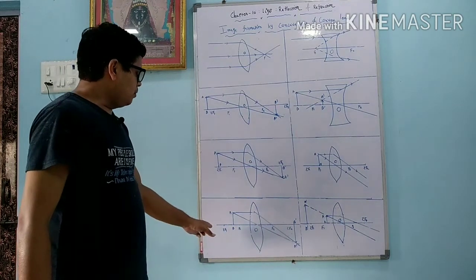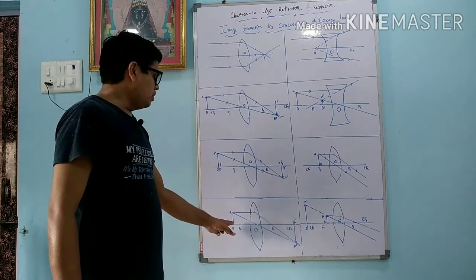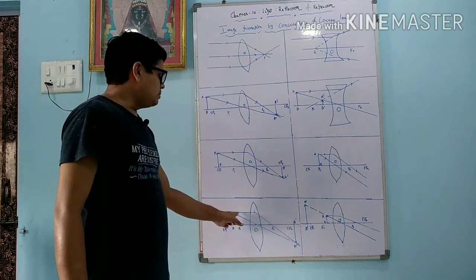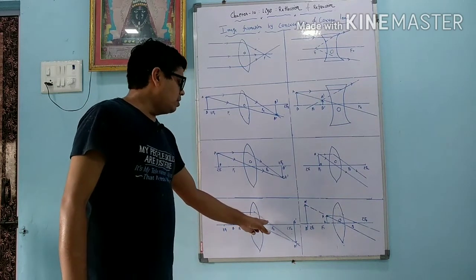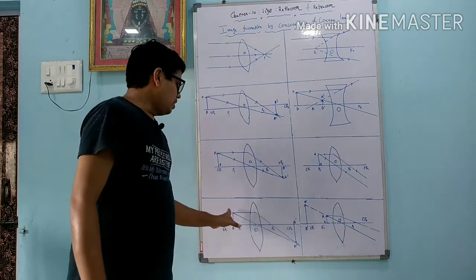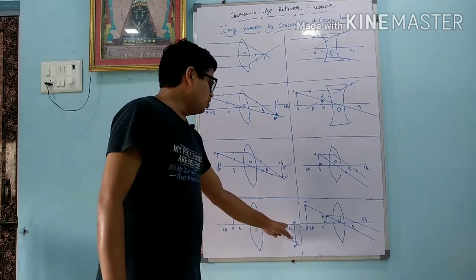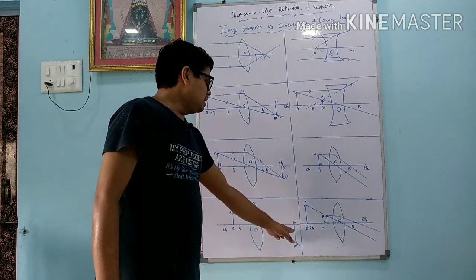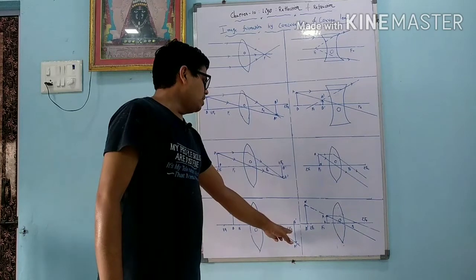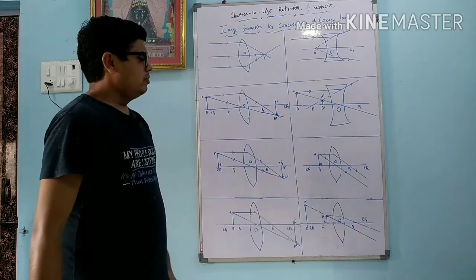Next condition: we put the object AB between f1 and 2f1. Two rays are passed — one ray is going parallel to the principal axis and it passes from f2. The second ray passes from the optical center. We get the image beyond 2f2. The image is real and inverted, the size of the image is magnified, and we get the image on the other side of the lens.